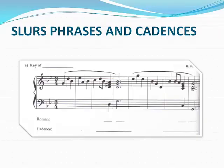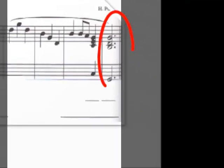Here are some more cadences for us to label. Let's begin by finding the key of this example. The key is G minor. How do we know it's G minor and not B-flat major? First, because there's an F sharp, which is the raised leading note. Secondly, we know it's in G minor because it looks like it ends with a G minor chord, which is a I chord in the key of G minor.